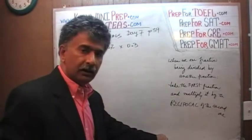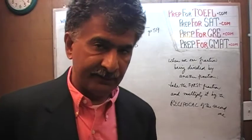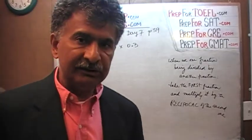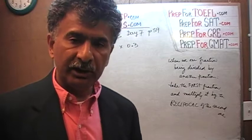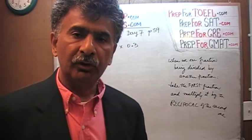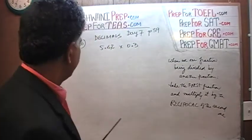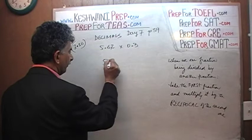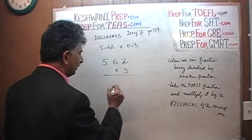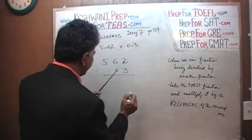When you have to multiply a number containing decimals with another number containing decimals, the easiest, simplest, quickest, and smartest way to deal with the scenario is to completely ignore the decimal point. Completely ignore it — then it is 562. Simply multiply it by 3. 3 times 2 is 6.